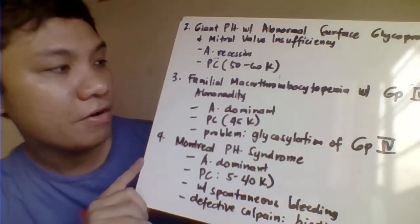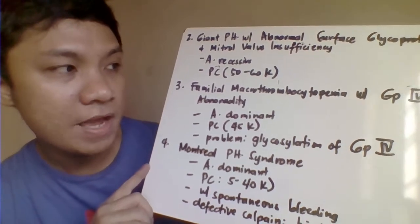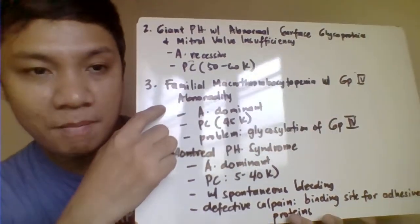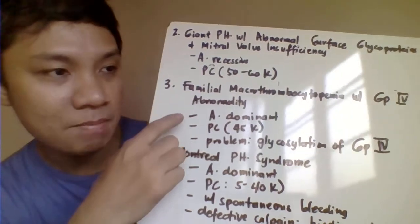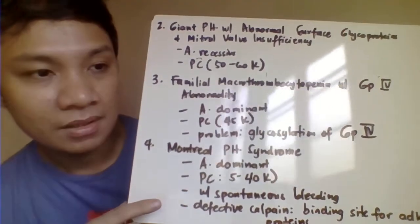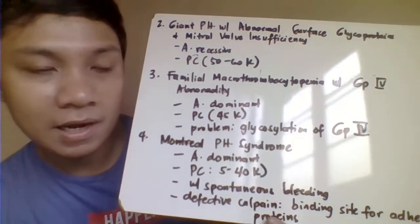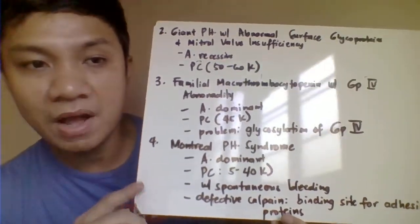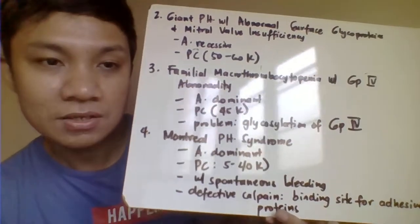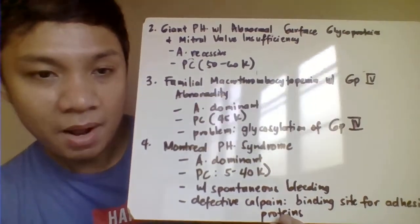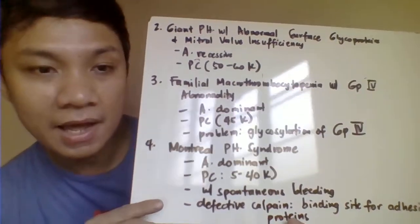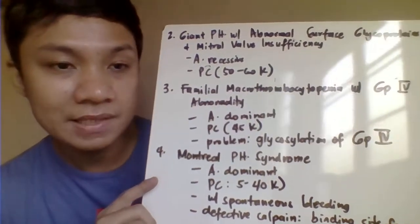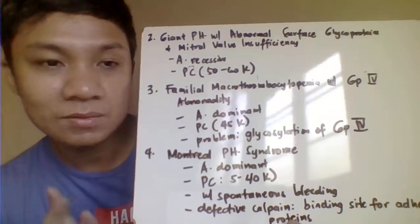The next one is familial macro thrombocytopenia with glycoprotein 6 and glycoprotein 4 abnormality. This is inherited as autosomal dominant and characterized by a platelet count of 45,000. The problem with glycoprotein 4 is not the concentration — you still have a normal concentration of glycoprotein 4. The problem is with the glycosylation process, specifically the first step for the synthesis of glycoprotein 6.